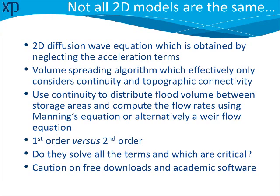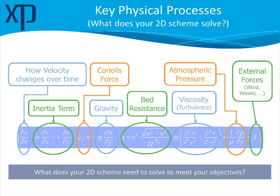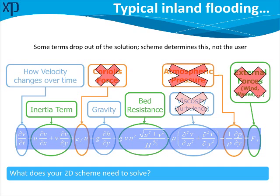So what are those important factors? Some are more important than others. It turns out that for typical inland flooding, many times some of these terms drop out. There are softwares that presume this is the case — it's prescribed, assumed, and coded into the software that these are neglected. That could be a good assumption, but it may not be for your model, for your instance, and that's important for you to know. So what does the 2D scheme solve? That's important to know.